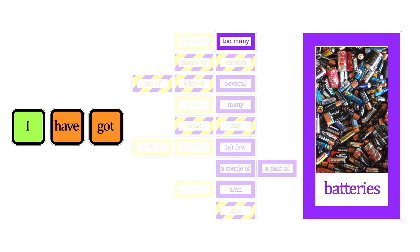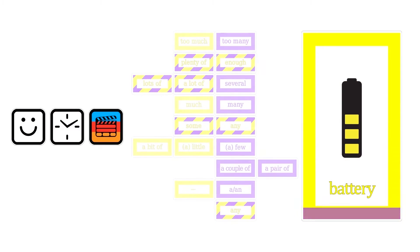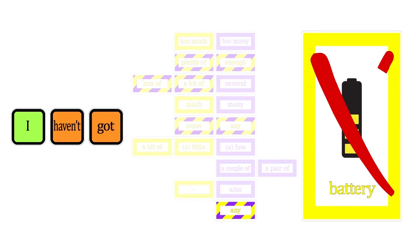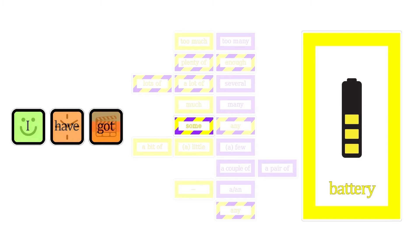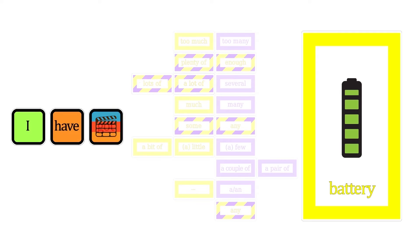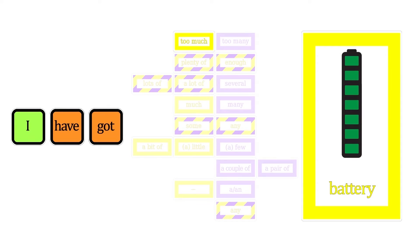However, battery becomes uncountable when it means percentage. I haven't got any battery. I have got battery. I have got a bit of battery. I have got little battery, or a little bit of battery. I have got some battery. I have got much battery. I have got a lot of battery, or I have got lots of battery. I have got enough battery. I have got plenty of battery. I have got too much battery.